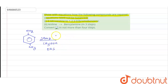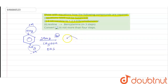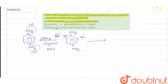The electrophile Br⁺ will attack on the electron-rich side — that is, the ortho and para positions with respect to NH₂ — because NH₂ is a +M group and NO₂ is a −M group. Since the para position is already occupied, the two bromine electrophiles attack the two ortho positions, giving us a dibrominated product.